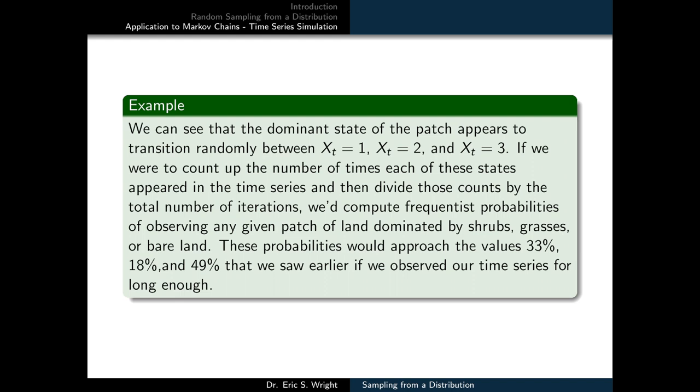We can see that the dominant state of the patch appears to transition randomly between x of t equals 1, x of t equals 2, and x of t equals 3. If we were to count up the number of times each of these states appeared in the time series and then divide those counts by the total number of iterations, we'd compute frequentist probabilities of observing any given patch of land dominated by shrubs, grasses, or bare land. These probabilities would approach the values 33%, 18%, and 49% that we saw earlier if we observed our time series for a long enough period of time.